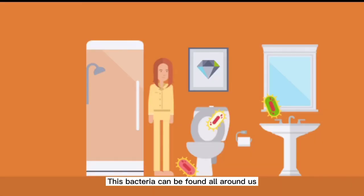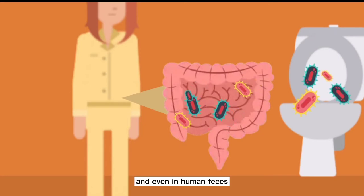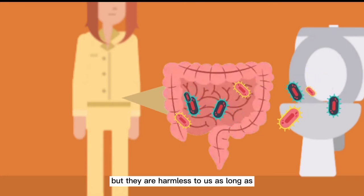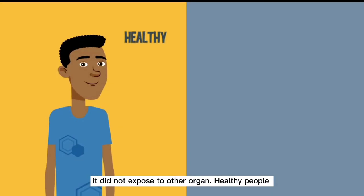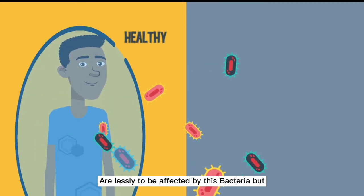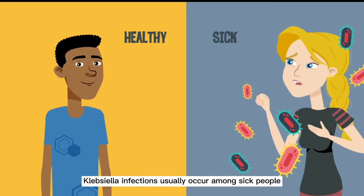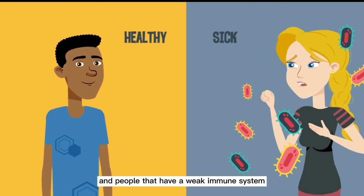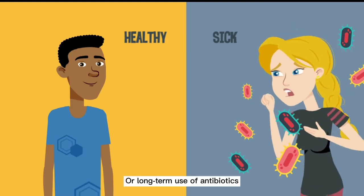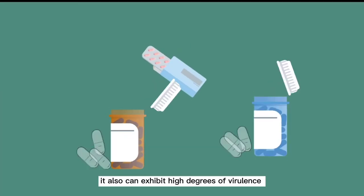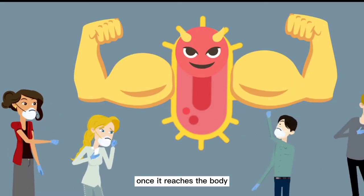Bacteria can be found all around us, and are normally found in human intestines and even in human feces, where they are harmless to us as long as they are not exposed to other organs. Healthy people are less likely to be affected by this bacteria, but Klebsiella infections usually occur among sick people and people with a weak immune system due to a medical condition or long-term use of antibiotics. It can also exhibit high degrees of virulence and antibiotic resistance once it reaches the body.